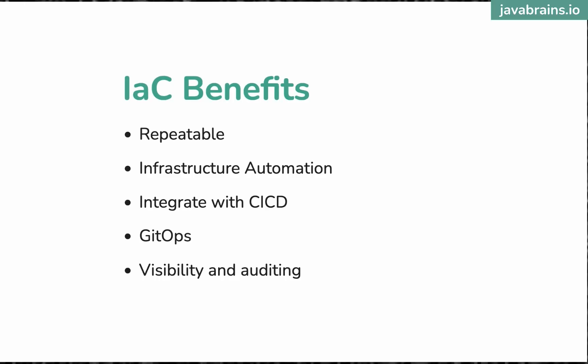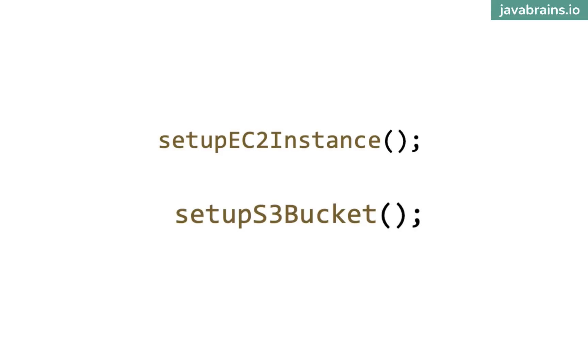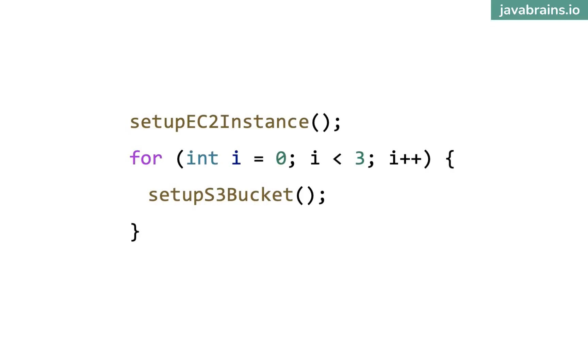So let's not use the UI — you can write code that makes calls to cloud APIs to create resources. That way it becomes repeatable. But with most infrastructure as code platforms, you don't write code imperatively. You write code in a declarative style. It's not just a different syntax — it's actually a different way of thinking about infrastructure code. Let me give you an analogy.